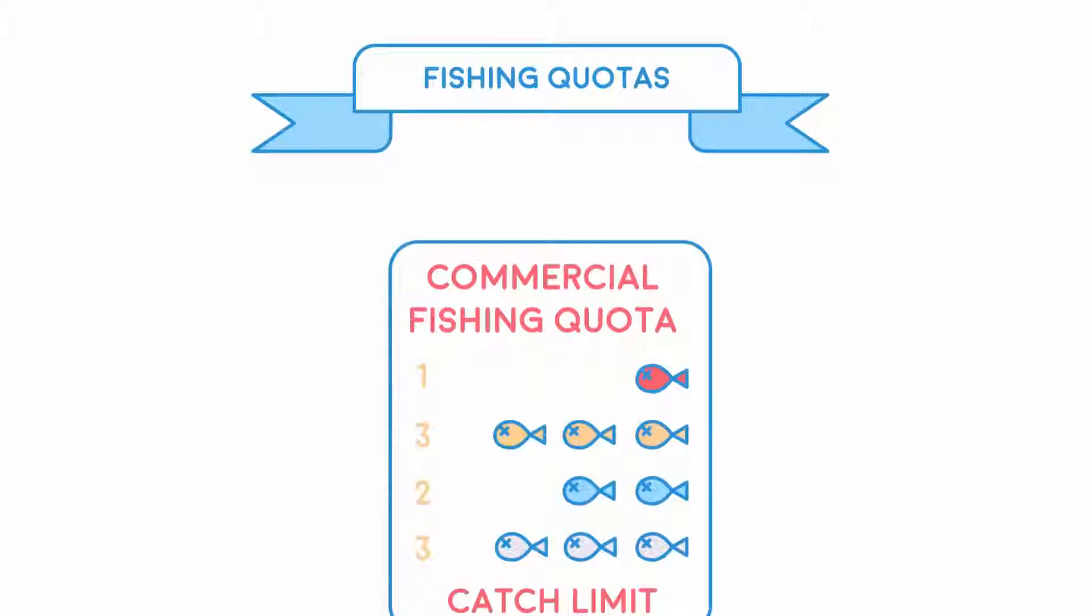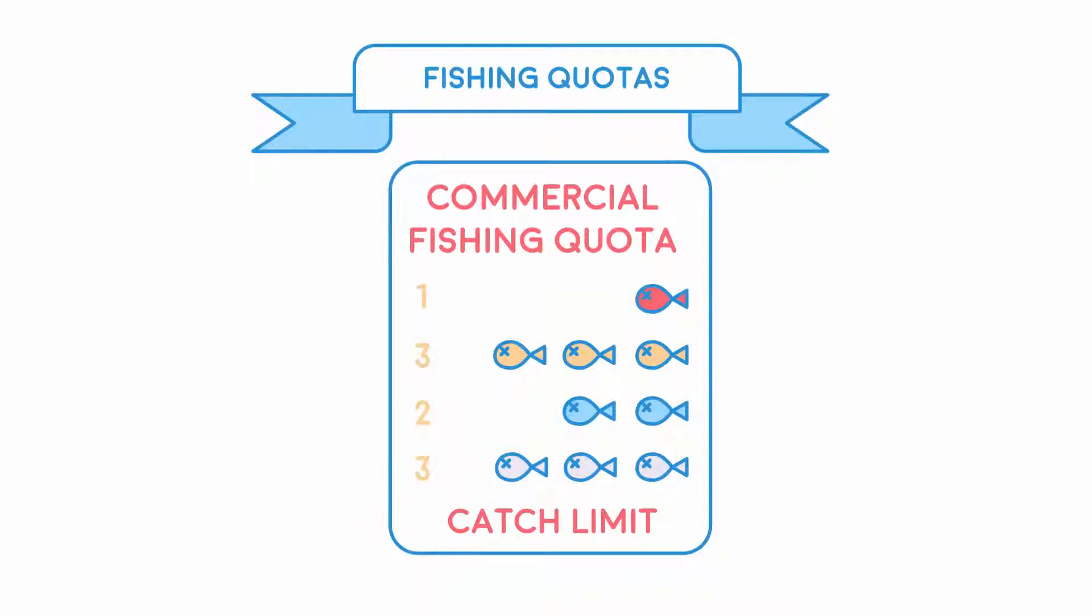Fishing quotas are strict numbers of fish that limit the amount of fish that people can catch. This reduces the amount of fish being taken from the sea.